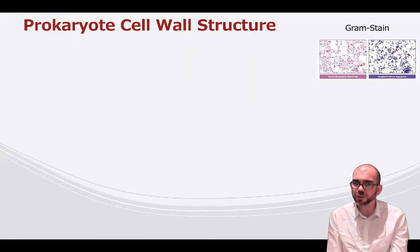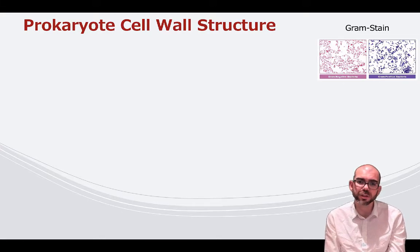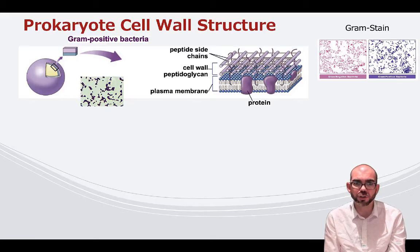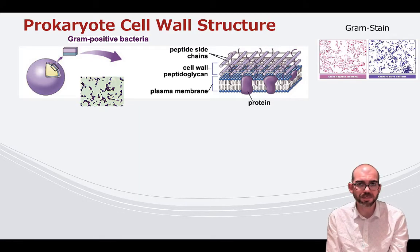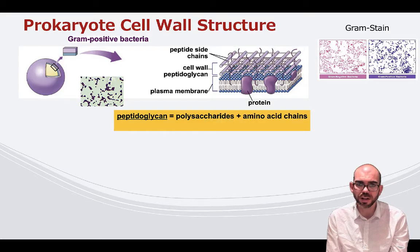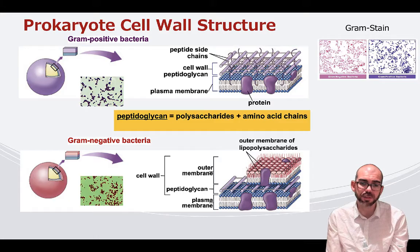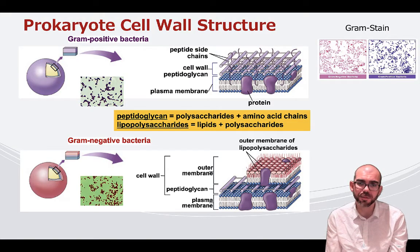Their cell wall structure is also pretty unique, particularly comparing them to plant cells. You can see the results of a very common bacterial test called a gram stain, which turns some bacteria pink and others purple. Gram-positive bacteria turn purple because they absorb the gram stain, which attaches to a structure called peptidoglycan — found on the outer portion of the cell wall, made of polysaccharides and amino acids. Gram-negative bacteria appear pink because on top of their peptidoglycan layer they have an outer membrane of lipopolysaccharides, which are made up of lipids and polysaccharides.